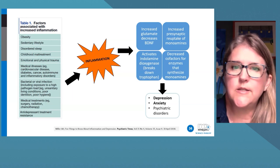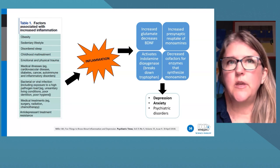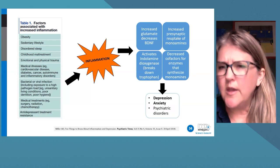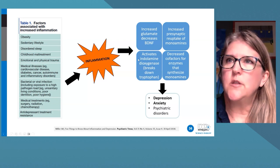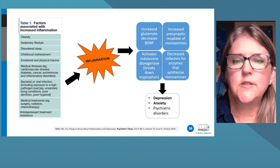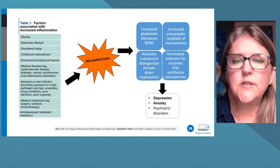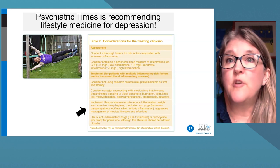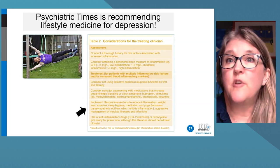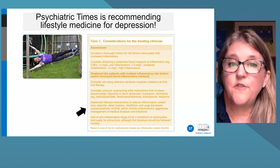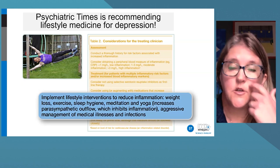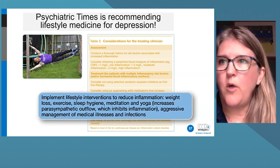Factors that may potentiate inflammation include obesity, being sedentary, ACEs (adverse childhood experiences), poor sleep, and infection — I would add smoking and poor diet. Through multiple mechanisms, inflammation results in higher glutamate, lower monoamines, and lower BDNF levels, which can result in psychiatric conditions — especially depression and anxiety. The article recommends assessing whether inflammation might be the root cause, not using SSRIs as first-line therapy, and implementing lifestyle interventions like sleep, exercise, meditation, and nutrition.